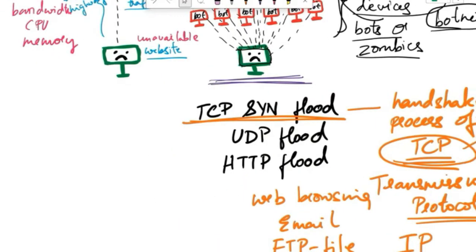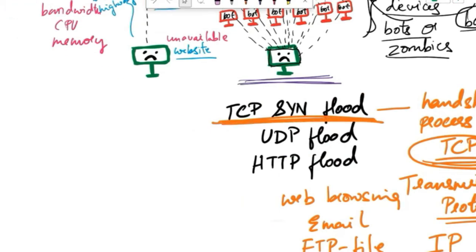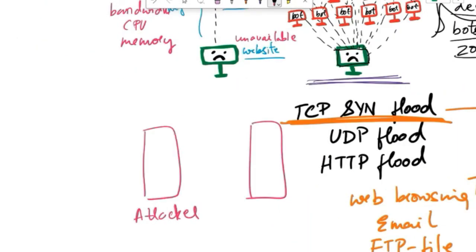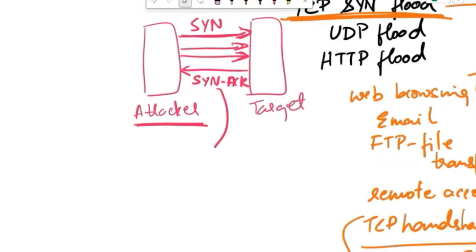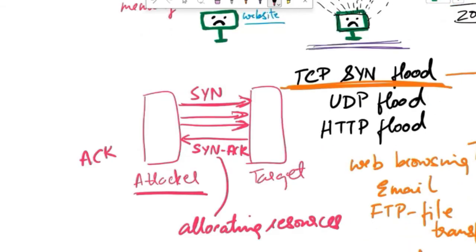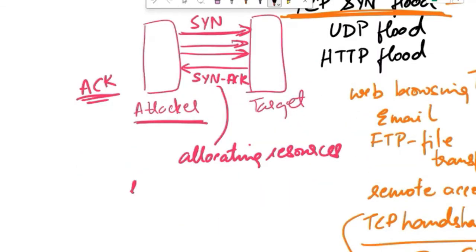Now that you understand what is the handshake process, let's go back to the TCP SYN flood attack. This is the attacker's device and the other one is the target device. The attacker sends a flood of SYN packets to the target server, pretending to initiate connections. But the attacker does not complete the handshake process by sending the final ACK packet. As a result, the target server responds to each SYN packet with a SYN ACK packet, allocating resources to establish a potential connection. But the attacker never sends the final ACK packet to complete the handshake.